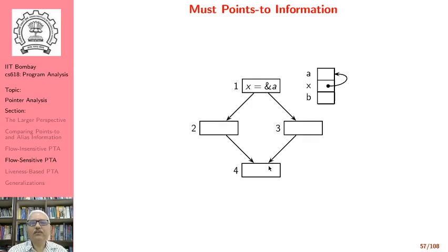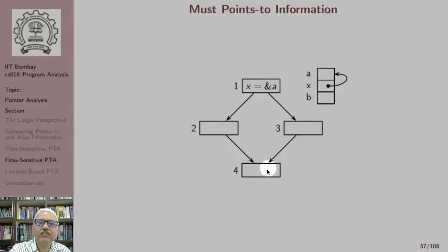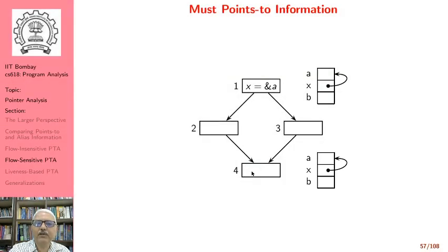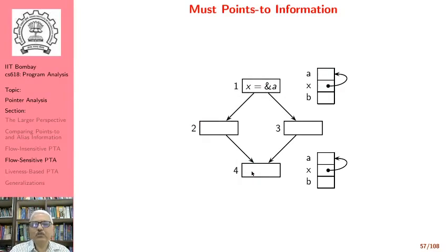By contrast, in the case of must points-to information, we have x points to a flowing along this path and x points to a flowing along this path as well. Note that in the case of must points-to information, a pointer can have at most one pointee.